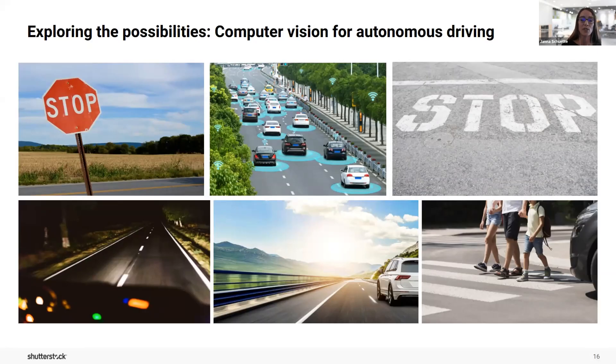Self-driving cars use a vast amount of data to continually improve their models to understand their surrounding world. Imagine a researcher that's developing this type of technology. In order to ensure that a car can identify a stop sign every time, this researcher would need lots of photos of stop signs to train their computers.